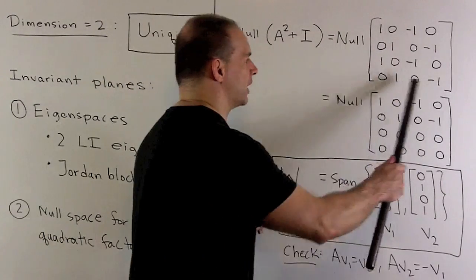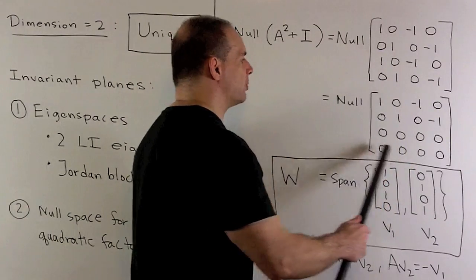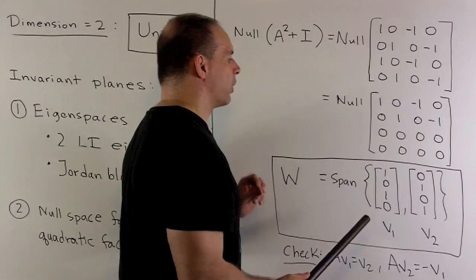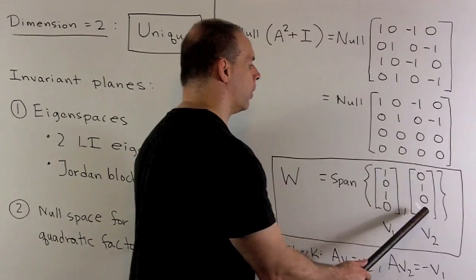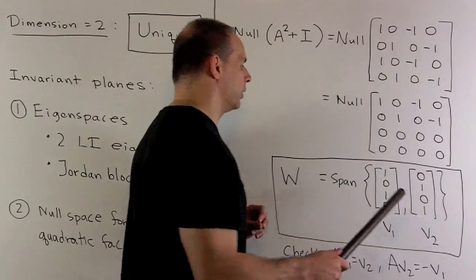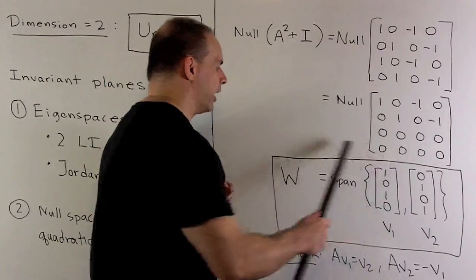If we work that out, here's A² plus I. We can row reduce. And then we know by inspection, we're going to have, as a basis for our null space, 1010 and 0101. Call those vectors V₁ and V₂. The claim is, this is going to be our invariant plane.